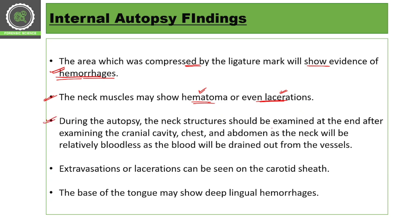During the autopsy, the neck structure should be examined at the end — after examining the cranial cavity, chest, and abdomen — because the neck will be relatively bloodless as blood drains out from the vessels. Extravasation or laceration can also be seen on the carotid sheath.